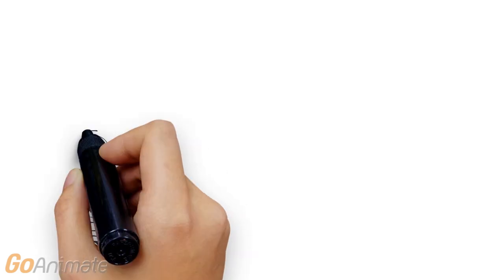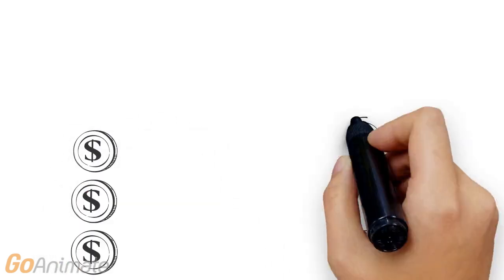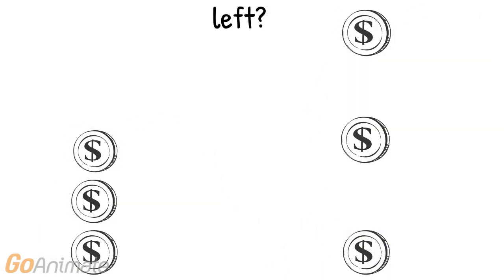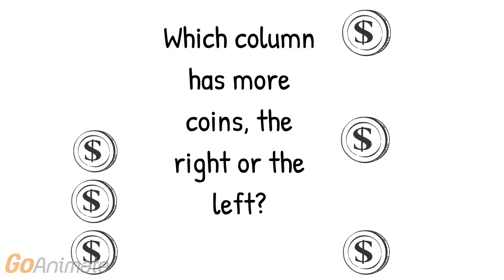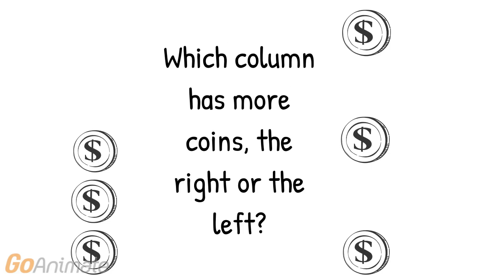Children in the preoperational stage may say the side on the right has more coins than the side on the left, even though they both have the same number of coins. Children in this stage have trouble distinguishing between quantity and appearance, and this is one of the biggest differences between preoperational and concrete operational stages. This is one variation of the conservation task, which assesses whether a child is in the preoperational or concrete operational stage.